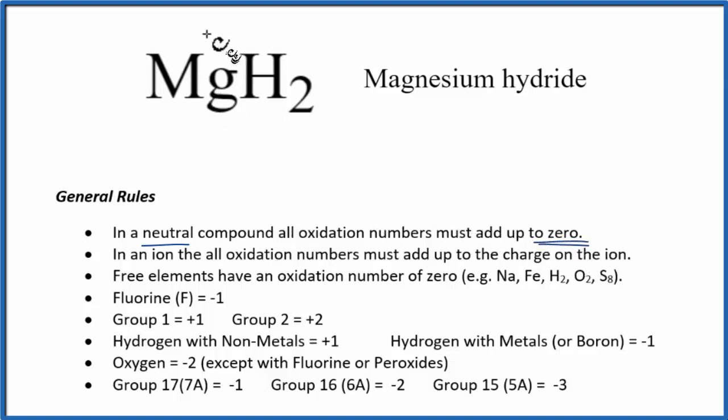We can look down our list. Magnesium's in group 2 on the periodic table, so its oxidation number is going to be plus 2. We're used to hydrogen having a plus 1 oxidation number, but that's when it's bonded to non-metals.